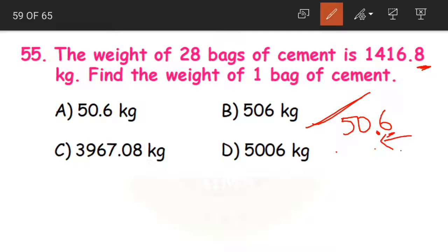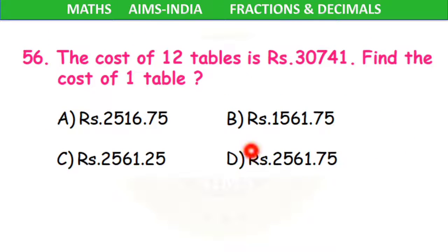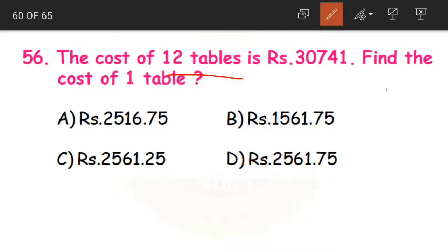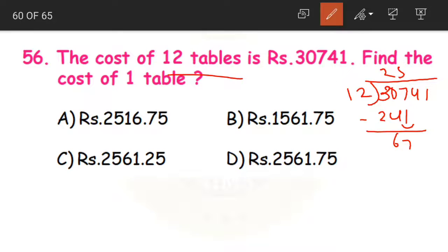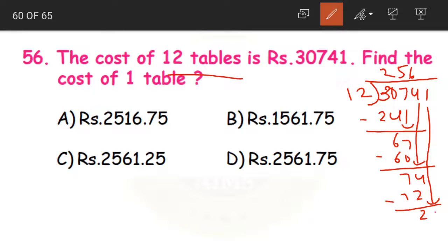That is option A. Next question 56. The cost of 12 tables is 30,741. Find the cost of 1 table. We divide the total cost by 12. 12 twos are 24, remainder 6, bring 7; 12 fives are 60, remainder 7, bring 4; 12 sixes are 72, remainder 2, bring 1; we have 12. 12 ones are 12, remainder 9. So the quotient is 2,561 but we have a remainder.